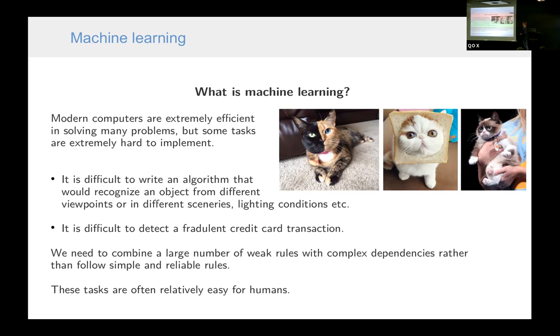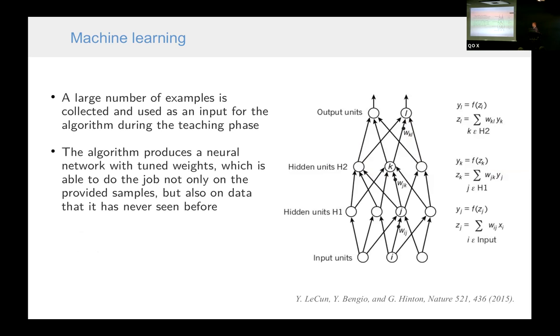However, these tasks are very easy for humans. For example, none of us would have any problem telling that there is a cat in each of these photos. In recent years, there was a huge breakthrough in machine learning and it is connected to neural networks, not only, but in large part to neural networks.